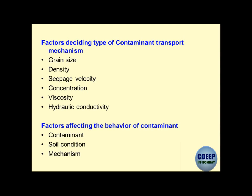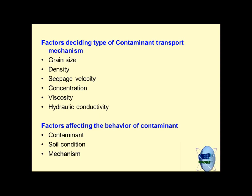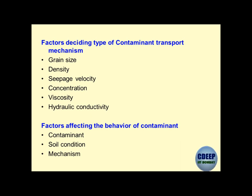Factors deciding the type of contaminant mechanism: grain size - fine-grained materials will not allow much advection but promote more diffusion. Also: density, seepage velocity, concentration of chemicals, viscosity, hydraulic conductivity - these concern the porous media side. The second aspect is contaminants. We have two types of situations: active and passive soil conditions - saturated or unsaturated. This becomes a multi-component situation.